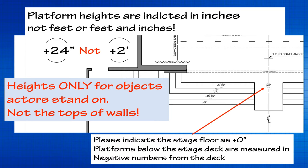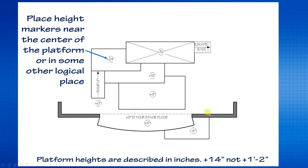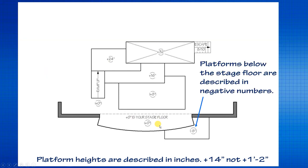Place the height marker near the center of the platform or a logical place — a sequence of 0, 8, 16, 24, 32 with a nice flow makes logical sense. Platform heights below the stage floor are described in negative numbers — stepping down to a platform lower than the stage floor. Those little X patterns are fine on a platform plan if you're figuring out major massing, but you don't need them on a regular ground plan unless the platform plan is so complicated it's hard to tell where the levels are — then the Xs help the eye see a contiguous level.